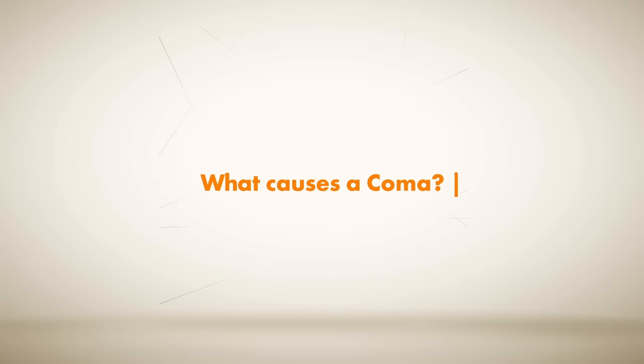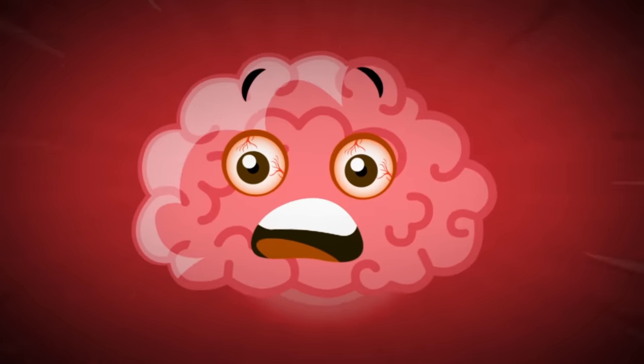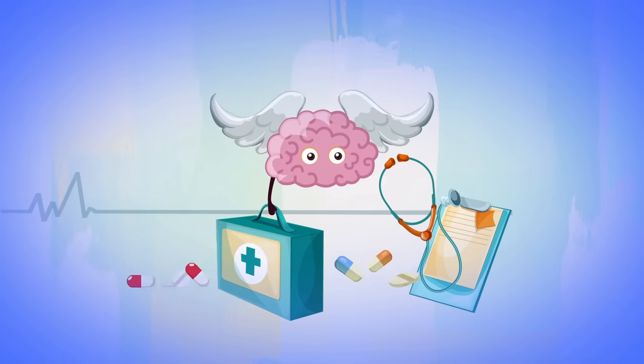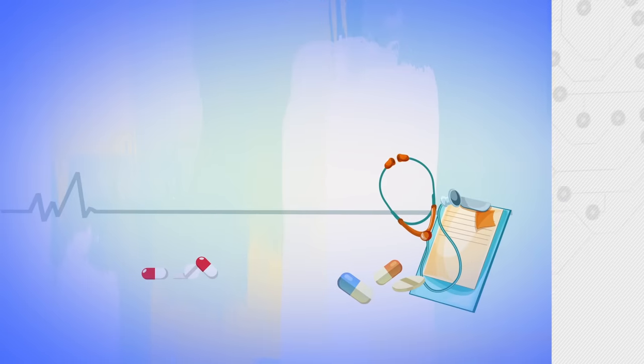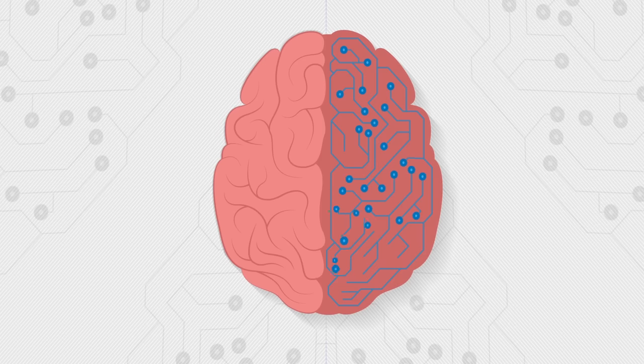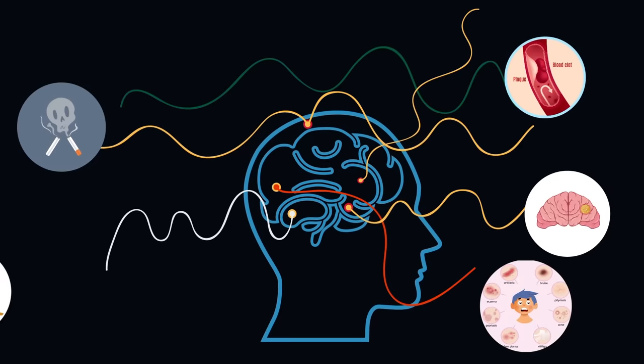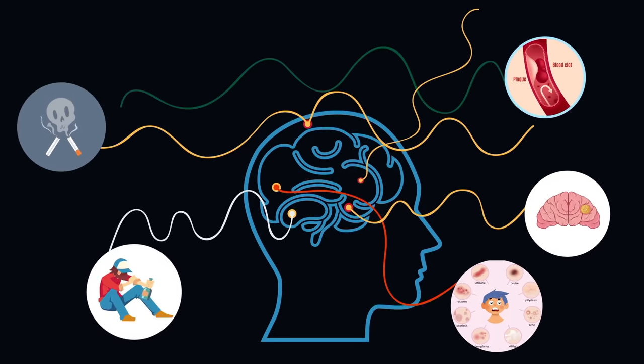So what causes a coma? Researchers theorize that when the brain is injured due to increased pressure, bleeding, loss of oxygen, or a buildup of toxins, the brain shuts down in order to repair itself from that trauma. If our brain is a supercomputer that manages all the intricate and delicate systems in our body, a coma is its response to working overtime, especially when experiencing stroke, disease, tumors, and drug or alcohol abuse.